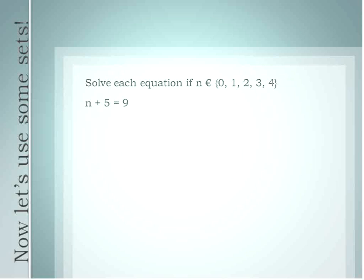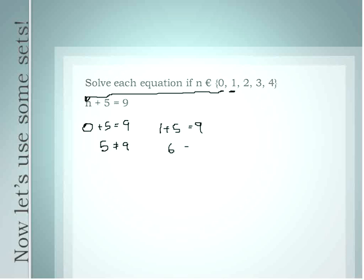What we're going to do is substitute those numbers in for n, starting with 0. We'll substitute 0 for n: 0 plus 5 is equal to 9 — that gives us 5 equals 9. That's not going to work. So I'll go on to the next number, 1, and substitute 1 in for n. Now it's 1 plus 5 is equal to 9 — giving us 6 equals 9.